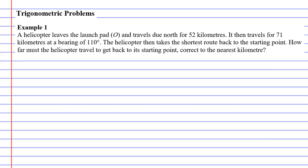As we read the question, it says that a helicopter leaves the launch pad O. It doesn't hurt to start drawing before you've even read the question. I'm going to draw a little point here and label it O - that's where the helicopter is starting. It then says that the helicopter travels due north for 52 kilometers. North means going up, so we'll travel upwards for 52 kilometers.